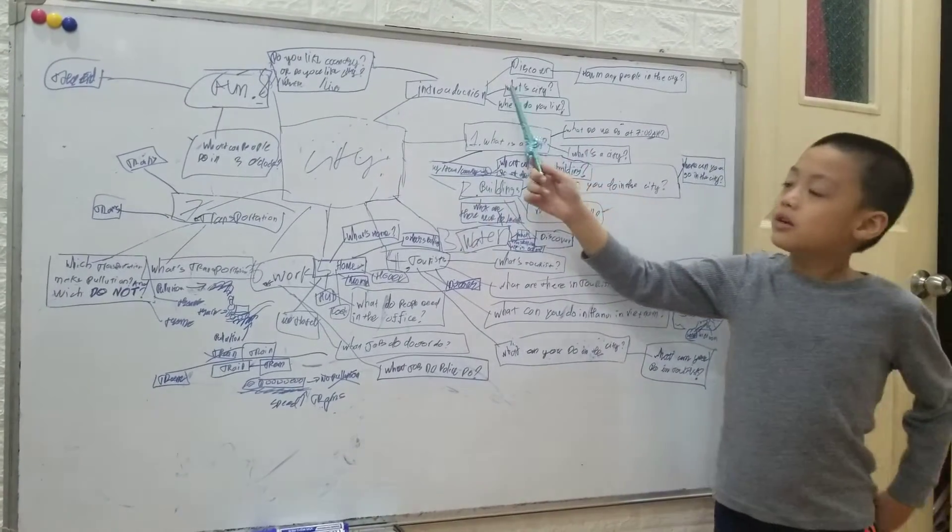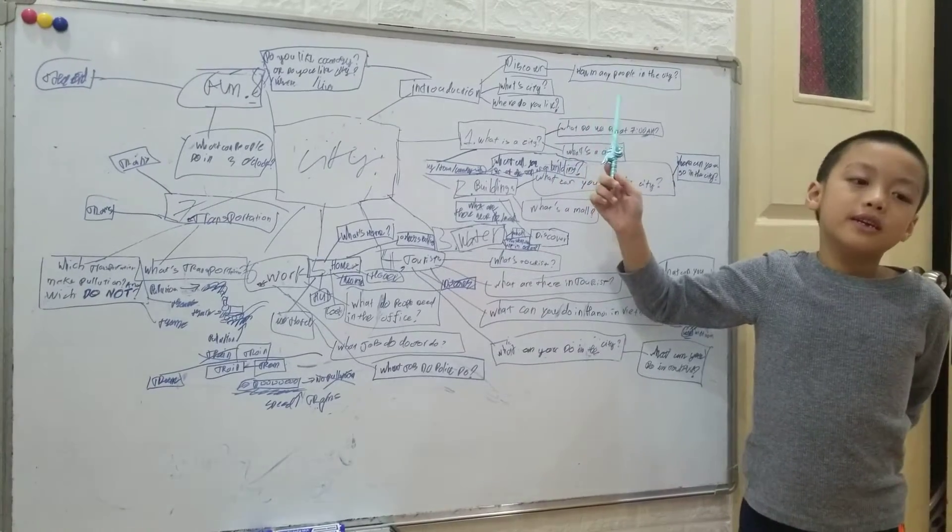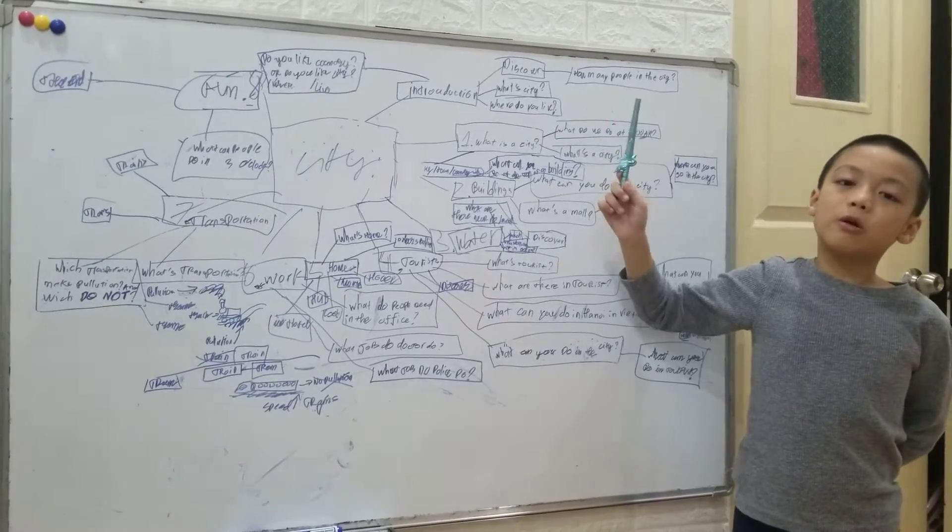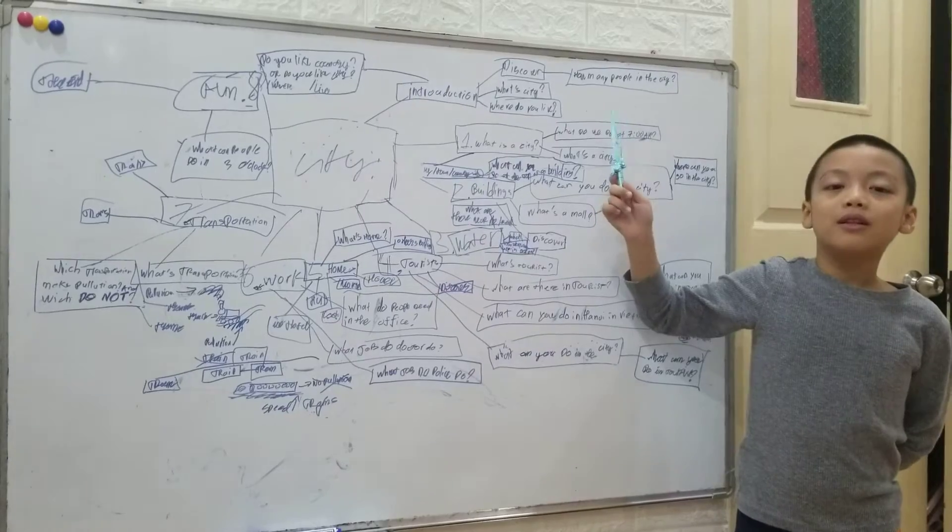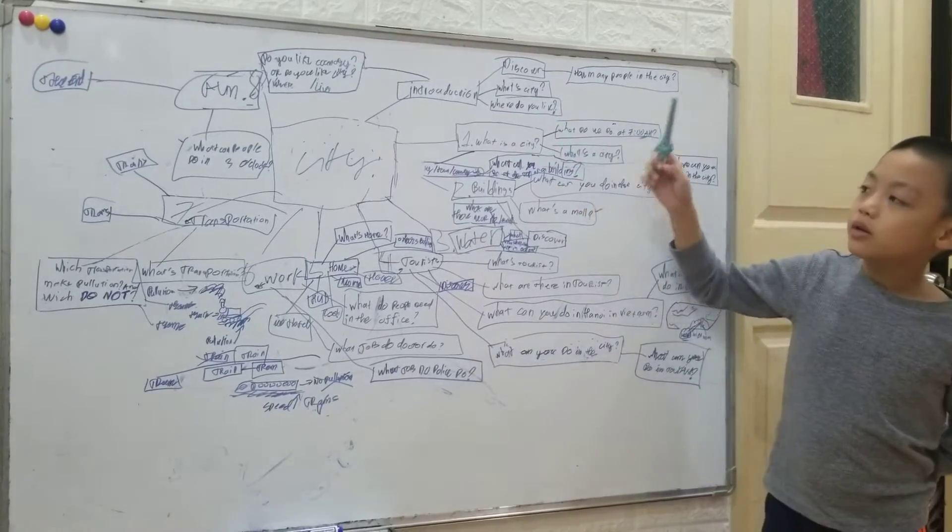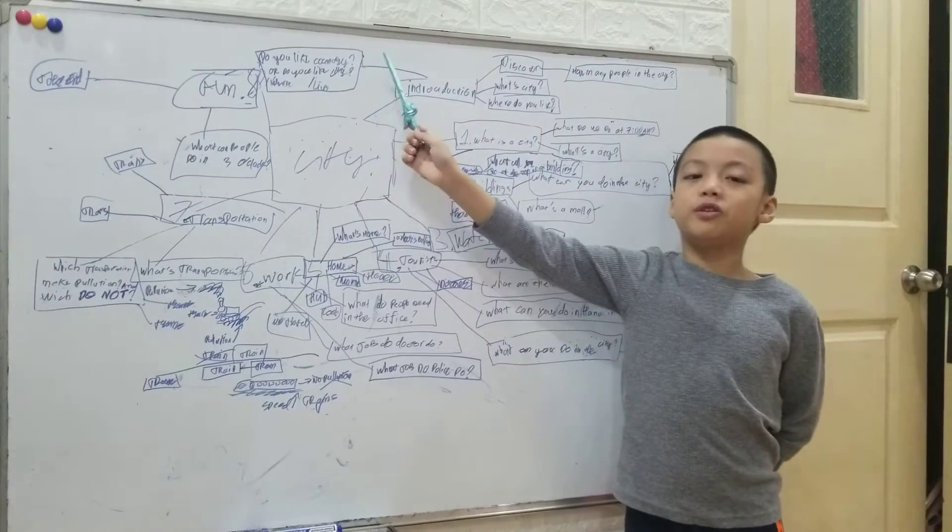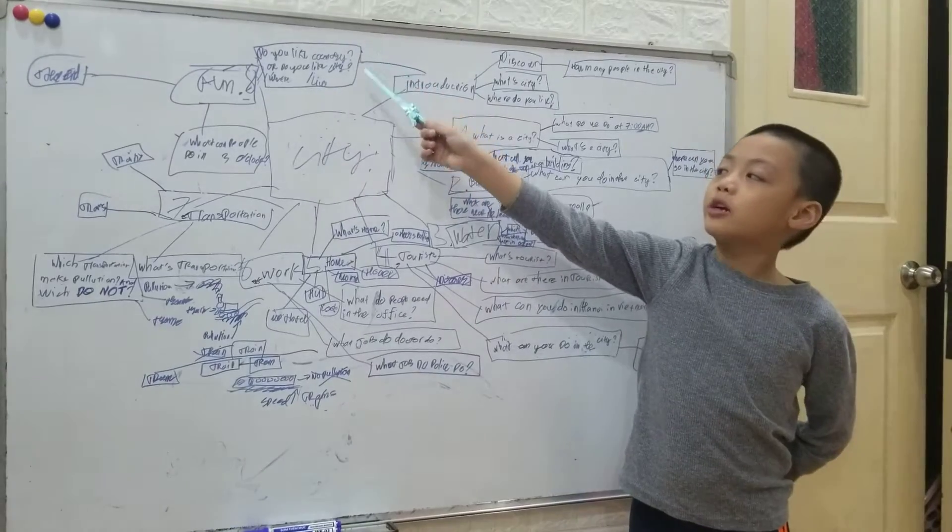What is a city? A city is a place where there are many people and cars. Do you like country or do you like city?